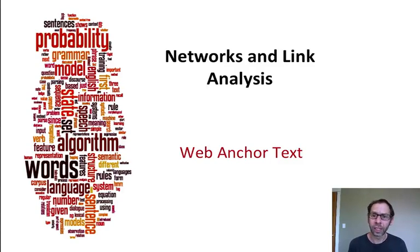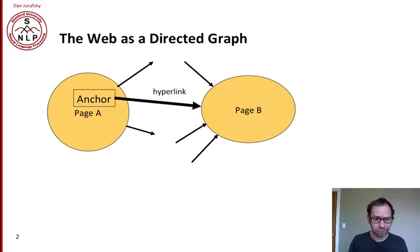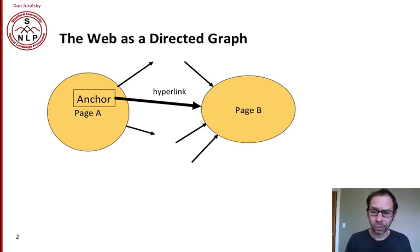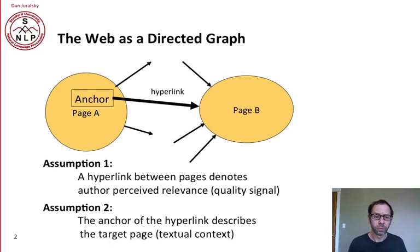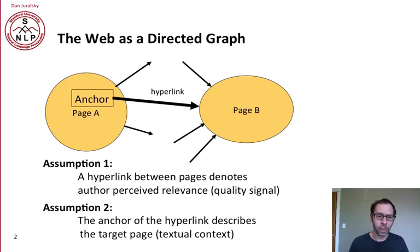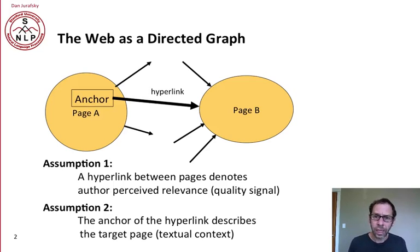Let's begin our discussion of networks and links by talking about anchor text. We can think of the web as a directed graph where any page has a link to another page via its anchor. We can make two assumptions about how anchor text plays a role in deciding if a page is relevant in a search. One is that a hyperlink between pages is an indication that the author perceived the second page as relevant to the first — a kind of vote. The second assumption is that the anchor text, the actual text around the hyperlink, is a description of the target page.